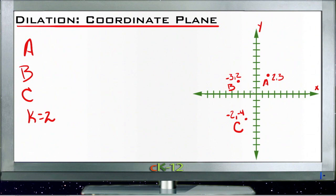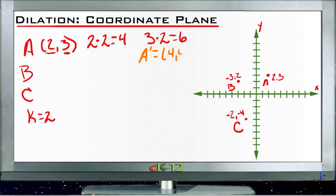So if we start with point A, point A is 2, 3, so we need to take the 2, the x-coordinate, and multiply it by our k-factor, 2, which gives us a new x-coordinate of 4, and then we take our y-coordinate, which is 3, multiply it by our k-factor, 2, and we get 6. So then we label our new point as A' and we'll make it with a different color so it's easy to see. A' then is at 4, 6.